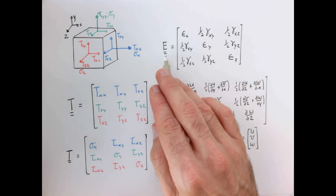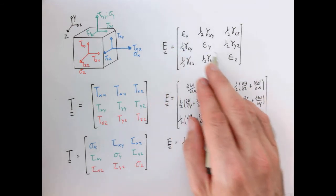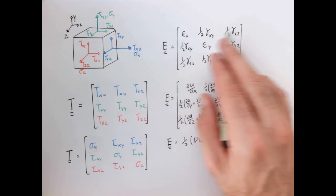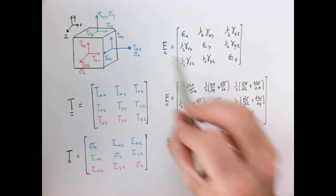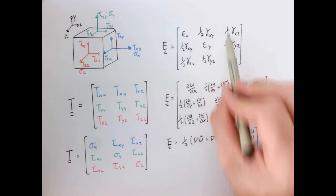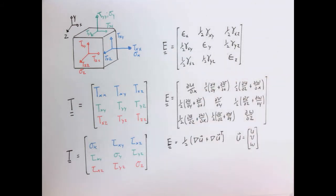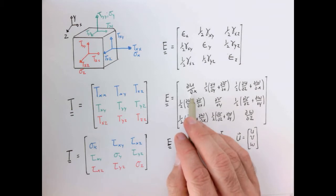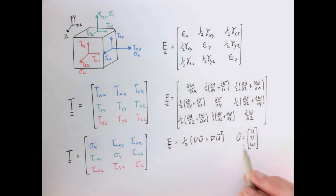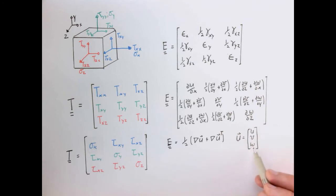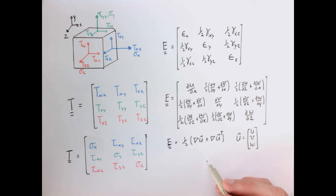E is our strain tensor, where we have the normal strains along the diagonal and the shear strains on the off-diagonal. Our definition of the strain tensor has a factor of one-half, which comes from relating the strain tensor to the displacement gradient. The strains are computed from the displacement gradient, and the displacement field is a vector with components u, v, and w — the x, y, and z components — which represent the vector that points from where a material point is in the initial configuration to where it moves in the deformed configuration.